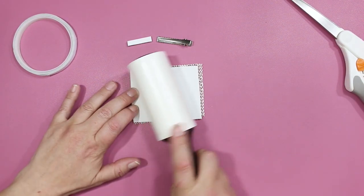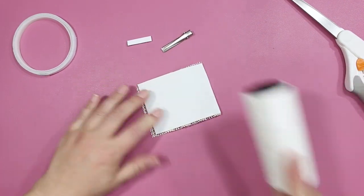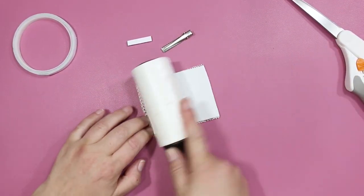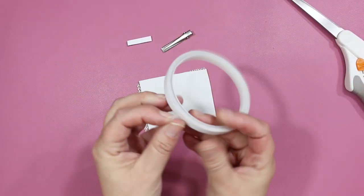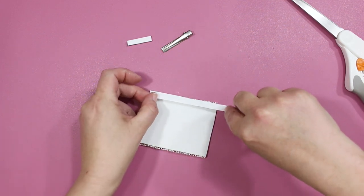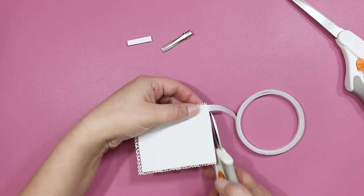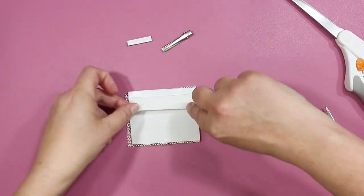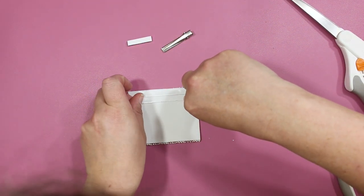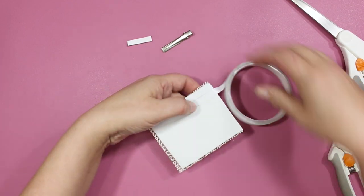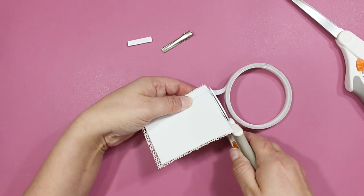So I like to use my lint roller to make sure that all the dust and stuff like that is off of it so that our sticky tape will stick to the back nicely. So you're just going to lay out your sticky tape onto the back and then just trim it on the sides, and then lay the next one right underneath it and then keep doing that all the way down to the bottom.